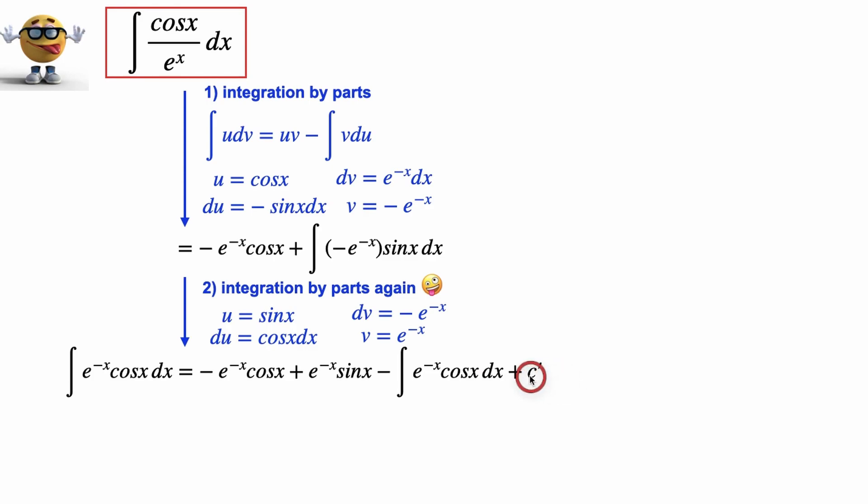And plus our integration constant. If we look at this, these two integrals are the same. And that's the one, that's the integral that we're trying to evaluate. So we can transpose this to the other side. And then for fun, I'm going to factor out this e to the negative x. And what we got is right here.